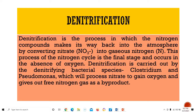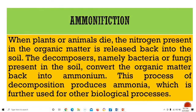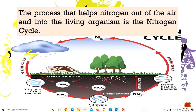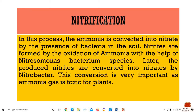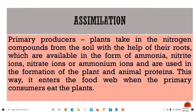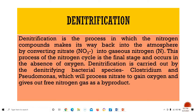Those are the important processes of the nitrogen cycle. To quickly review: first, nitrogen fixation; second, nitrification; third, assimilation; fourth, ammonification; and fifth, denitrification. Get familiarized with these five steps. The nitrogen cycle is really important because it helps plants and benefits us as well.